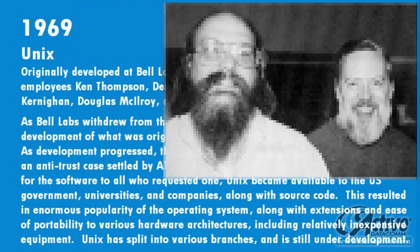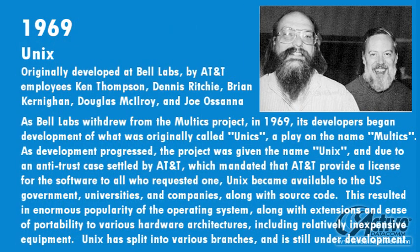In 1969, a team of AT&T employees at Bell Labs began the development of Unix. Due to an antitrust case settled by AT&T, Unix became available to the US government, universities, and companies, along with its source code. This resulted in enormous popularity of the operating system, along with extensions and ease of portability to various hardware architectures, including relatively inexpensive equipment. Unix has split into various branches, and is still under active development.